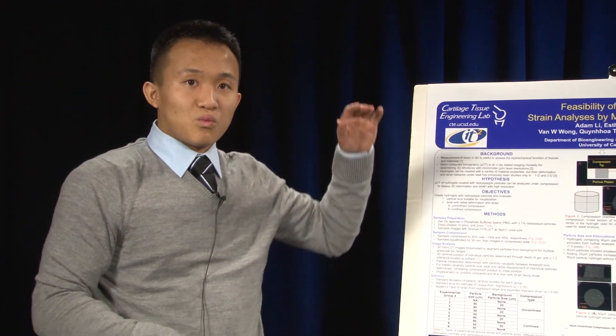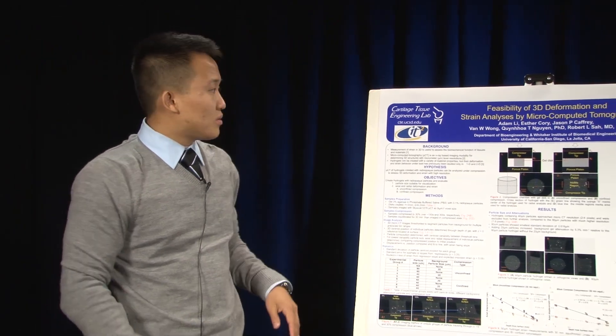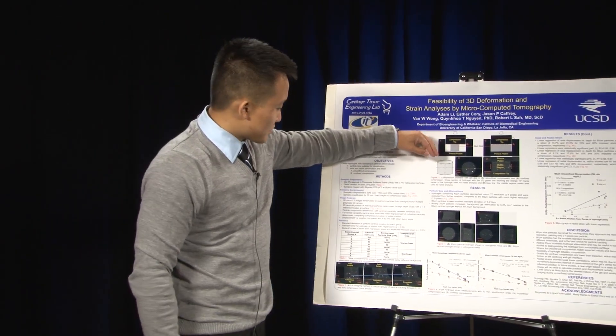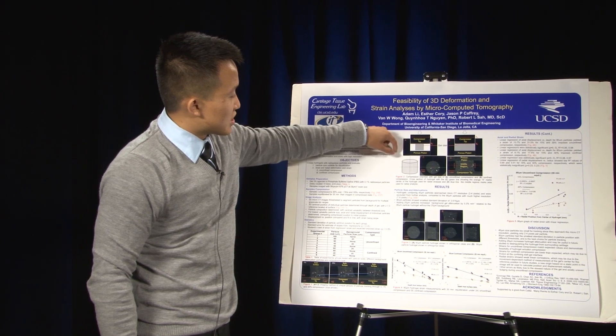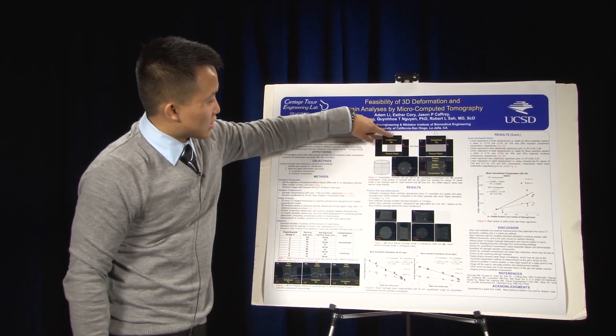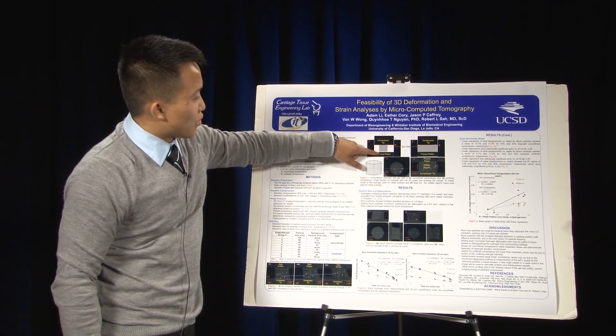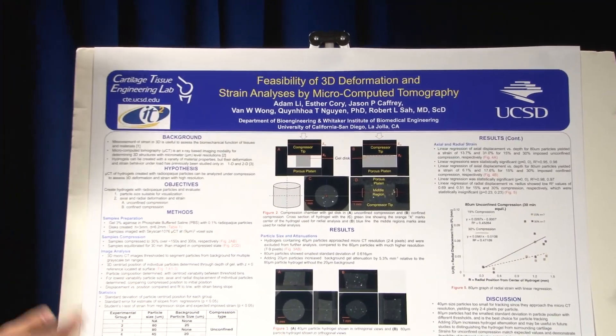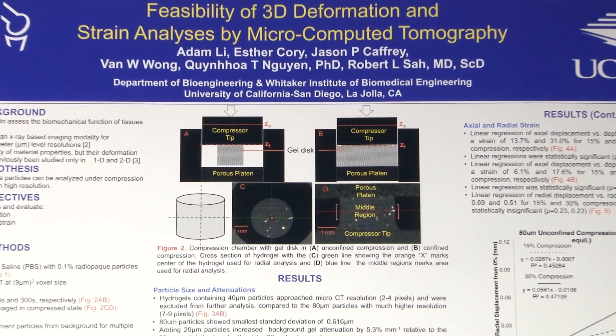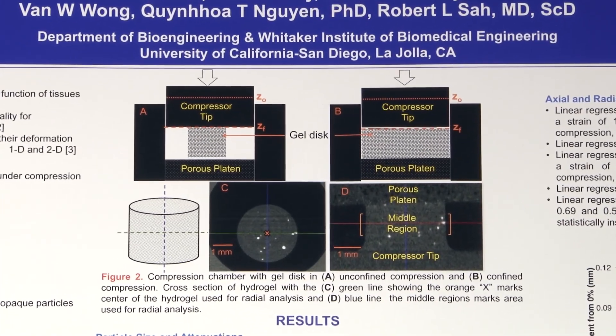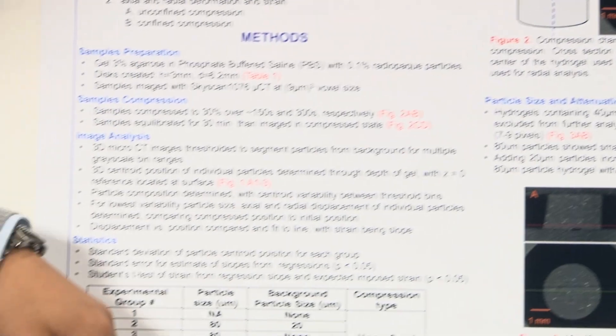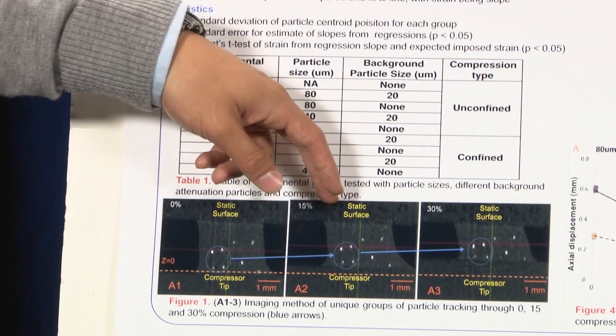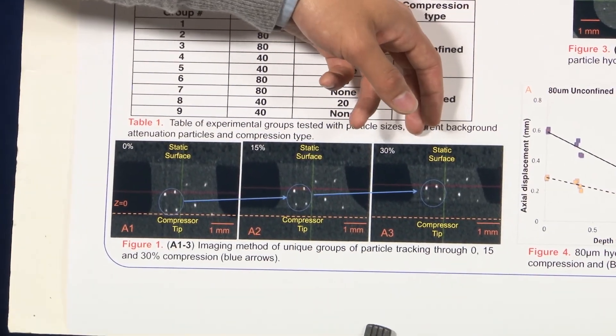We focused on the 3D centroid positions of the different particles and we looked throughout the depth of the hydrogel. In this picture, you can see a schematic of the hydrogel inside the compression chamber. We took particles throughout the hydrogel and we tracked them. In this figure, you can see similar formation of particles going from zero percent compression to 15 percent compression to 30 percent compression.